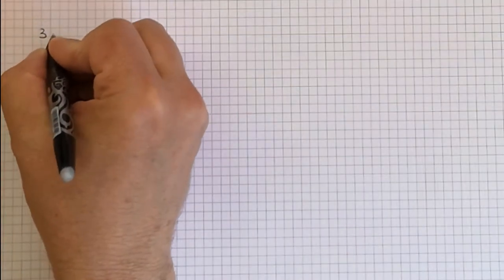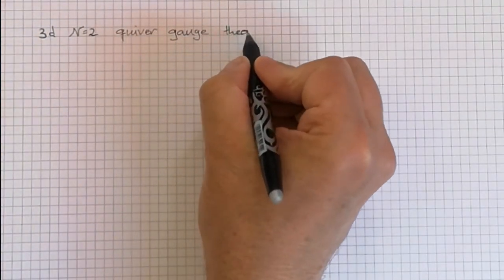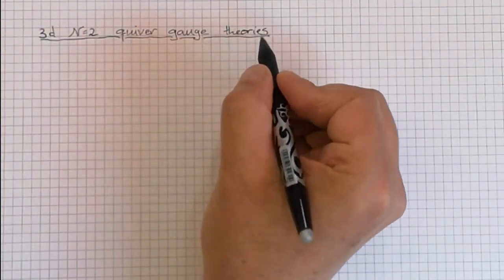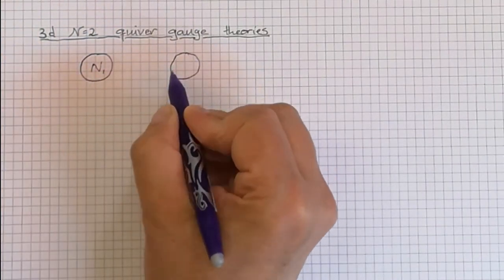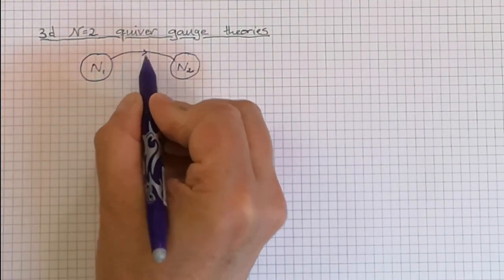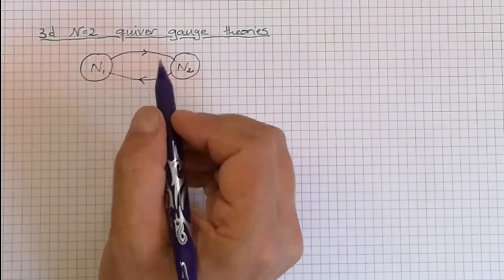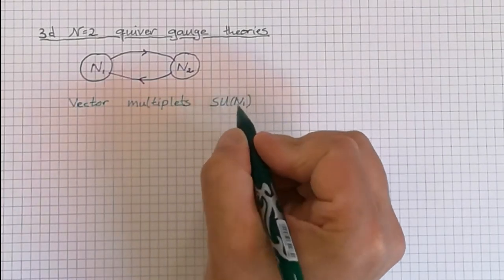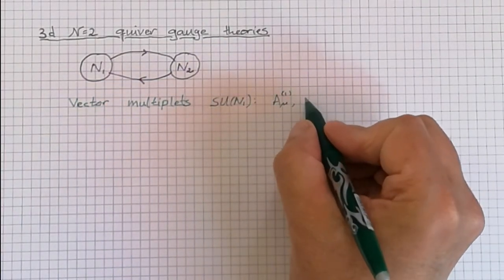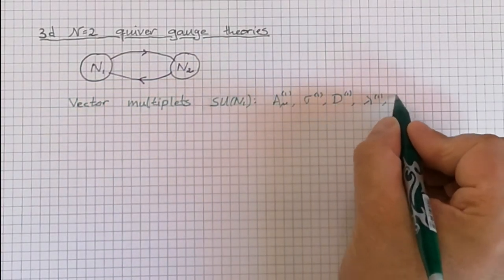So what are quiver gauge theories? It is a way to define the matter content of certain field theories. In this case, this is three-dimensional theories with n equals 2 supersymmetry, which is very closely related to four-dimensional n equals 1 supersymmetry. And it's made out of a diagram with nodes and arrows. The nodes represent vector multiplets. In this case, we have U(N1) and U(N2). Each of them has a gauge field.